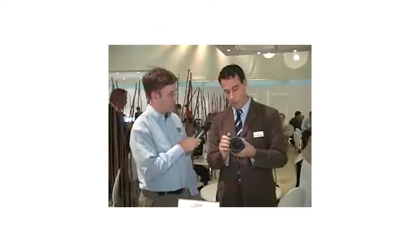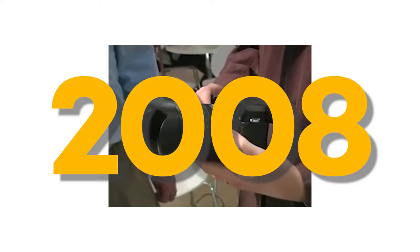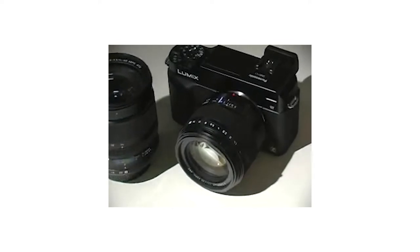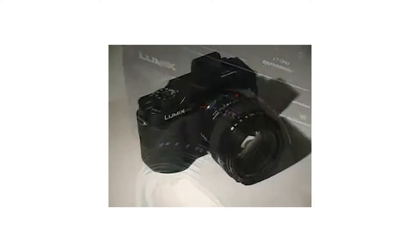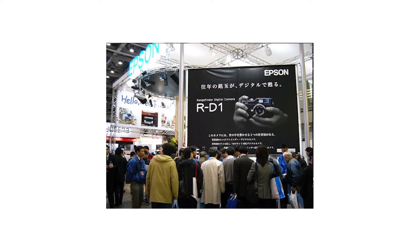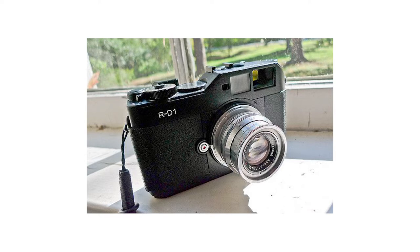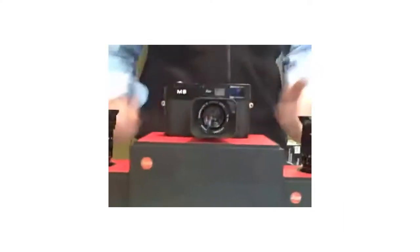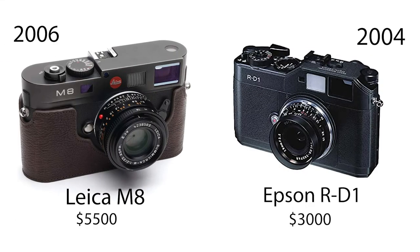Micro Four Thirds was a new camera format developed back in 2008 for mirrorless camera systems. At the time, mirrorless was fairly new, with only two true consumer mirrorless cameras on the market: the first coming in 2004 by Epson — yes, the printer company — the Epson RD1, coming in at $3,000, and then the Leica M8 in 2006 for $5,500.